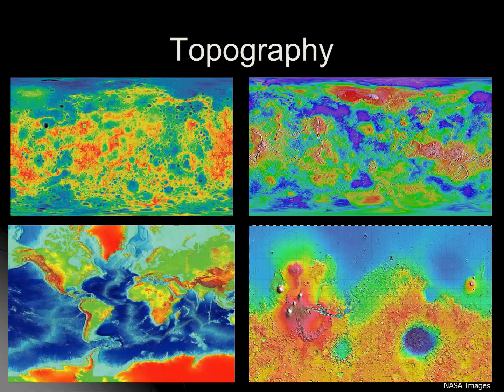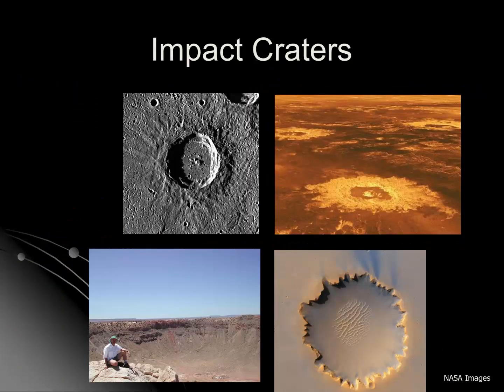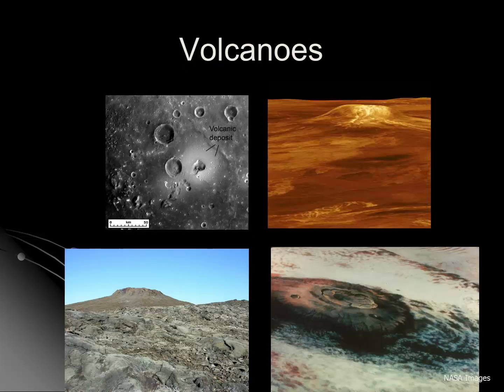Let's take a look at some more similarities and differences between these four planets. One feature they all have in common is impact craters. In fact, almost every solid object in the solar system has evidence of impact craters. We also know that each of these four planets has evidence of volcanism. The upper left shows volcanic deposits on the planet Mercury. The upper right is a radar image of one of the tall volcanoes on the planet Venus. Lower left is a volcano I photographed in the Galapagos Islands. Then in the lower right is Olympus Mons, the largest volcano in the solar system, more than two and a half times taller than Mount Everest.